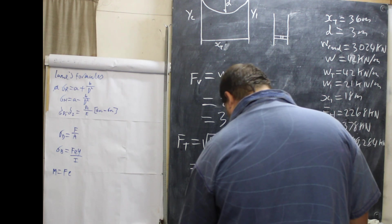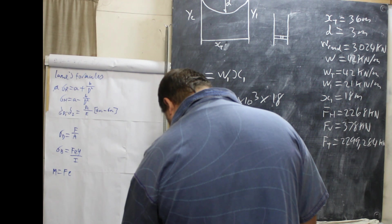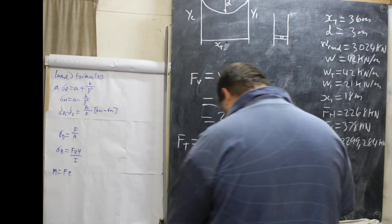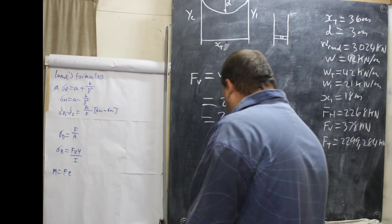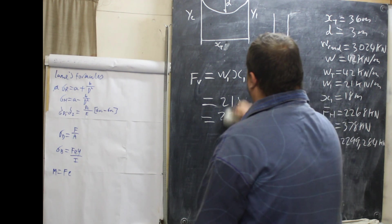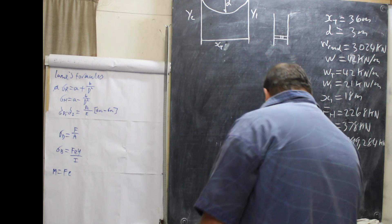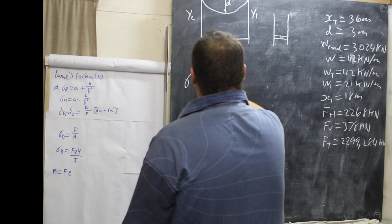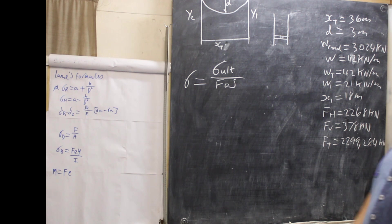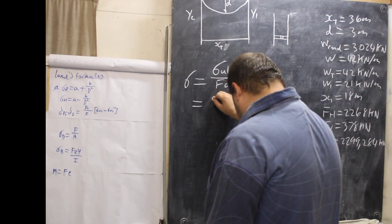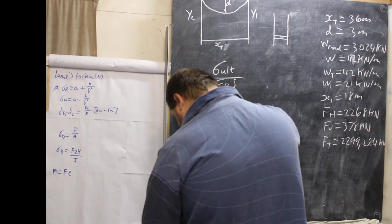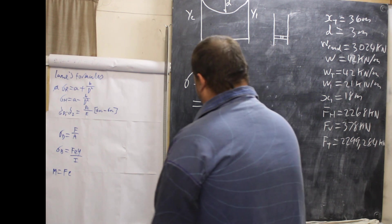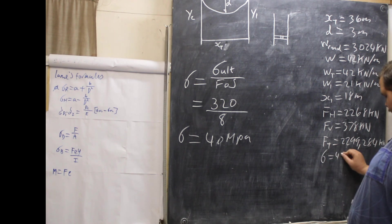Now we do part 3: the diameter required for the cable if the ultimate tensile stress is limited to 320 megapascals, with a factor of safety of 8. First, we find the working stress: stress equals stress ultimate over factor of safety, so 320 over 8 equals 40 megapascals.